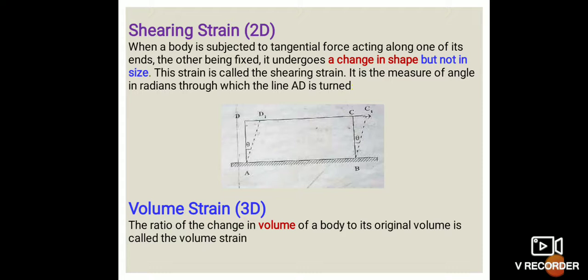For example, consider the diagram: A, B, C, D — the base A, B is fixed and we apply force to the top. If we push by 1 cm, D moves 1 cm and C moves 1 cm. The reference angle at A, B is theta. So the shearing strain is the change in shape divided by original shape — change in angle by original angle. Strain means change in dimension divided by original dimension.